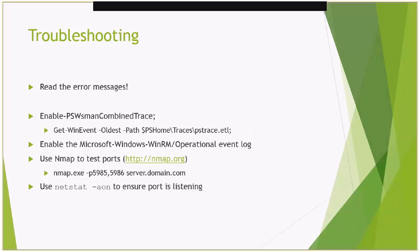For troubleshooting WinRM remote connection problems, first read the error messages — they frequently contain very helpful information. If you're diving deep into an issue, there's a command called Enable-PSWSManCombinedTrace that spits out an ETL log file in the $PSHome\Traces directory; you can use Get-WinEvent to explore it. Within Computer Management Event Viewer, there's a log under Microsoft-Windows-WinRM\Operational that you can enable for additional logging.